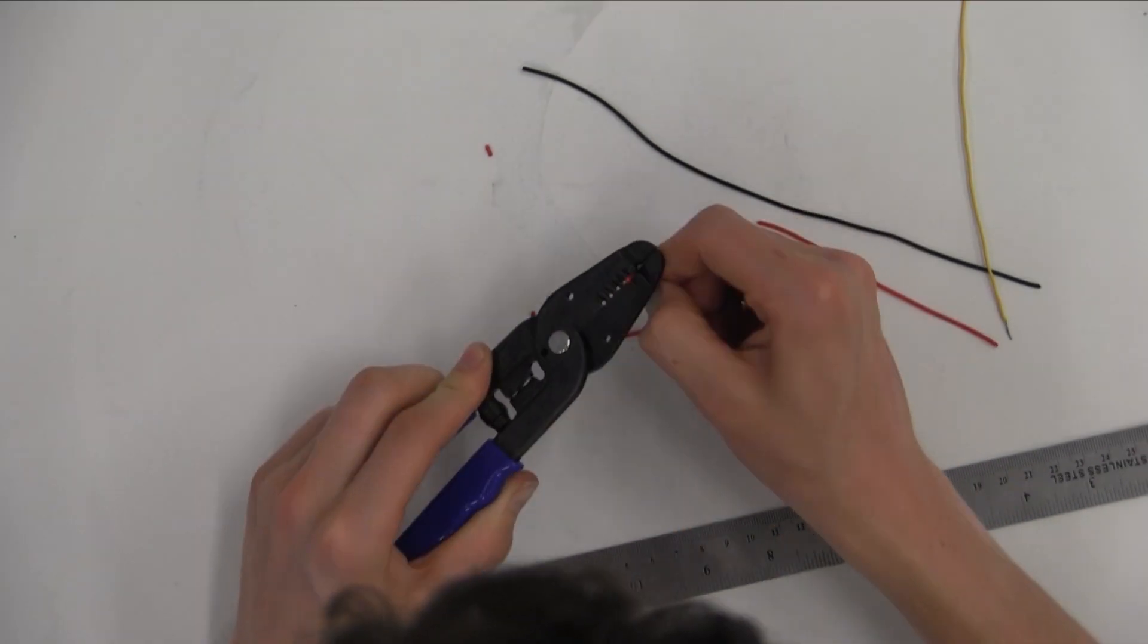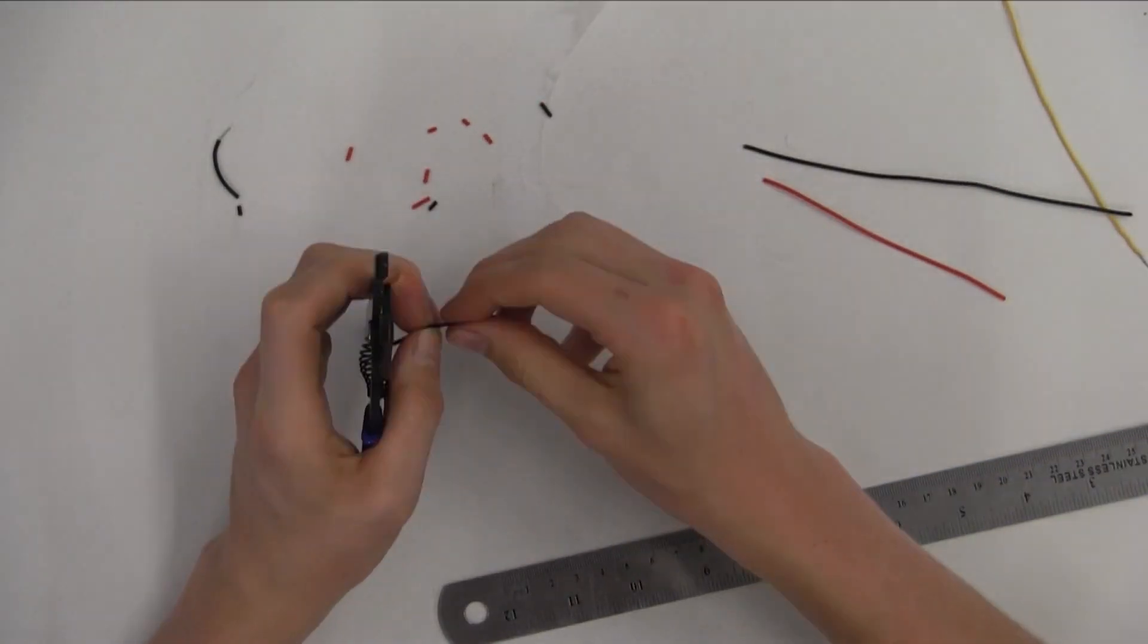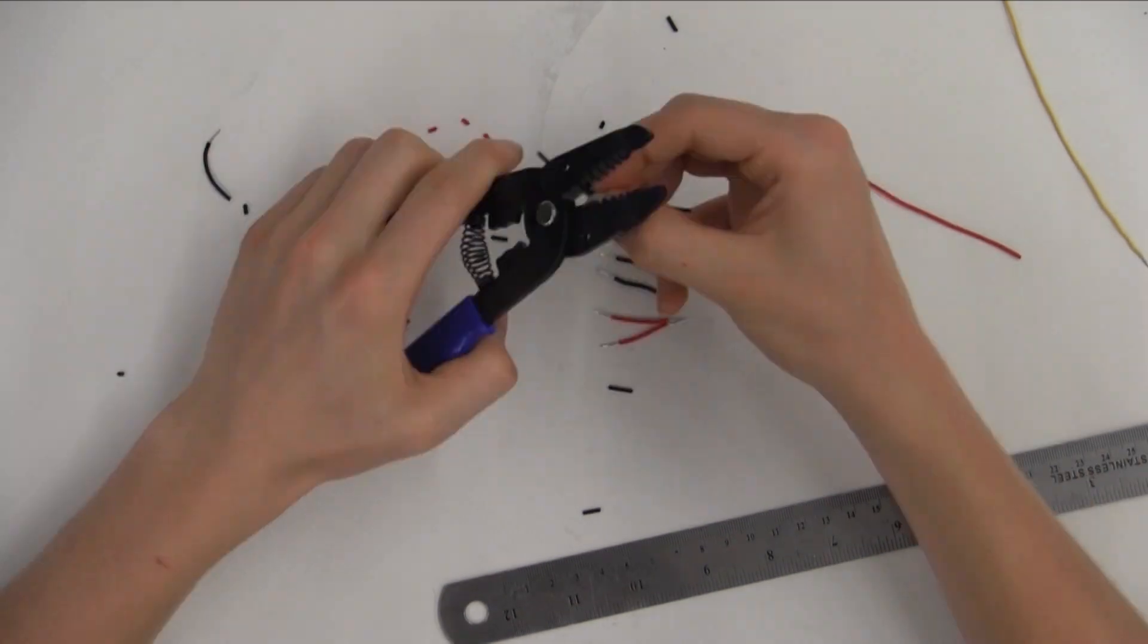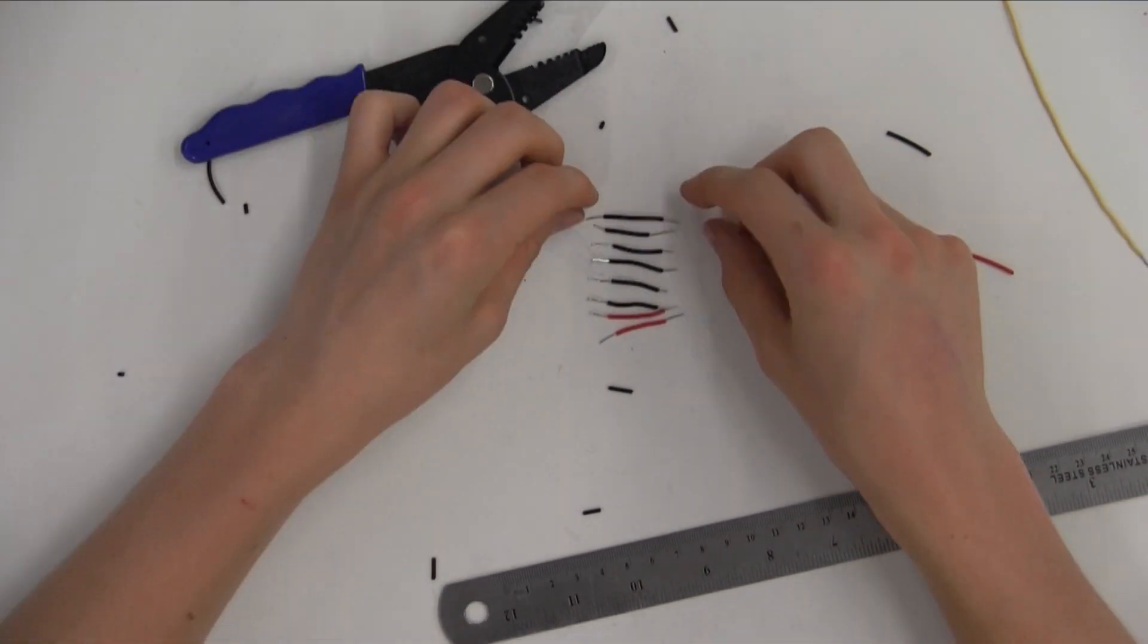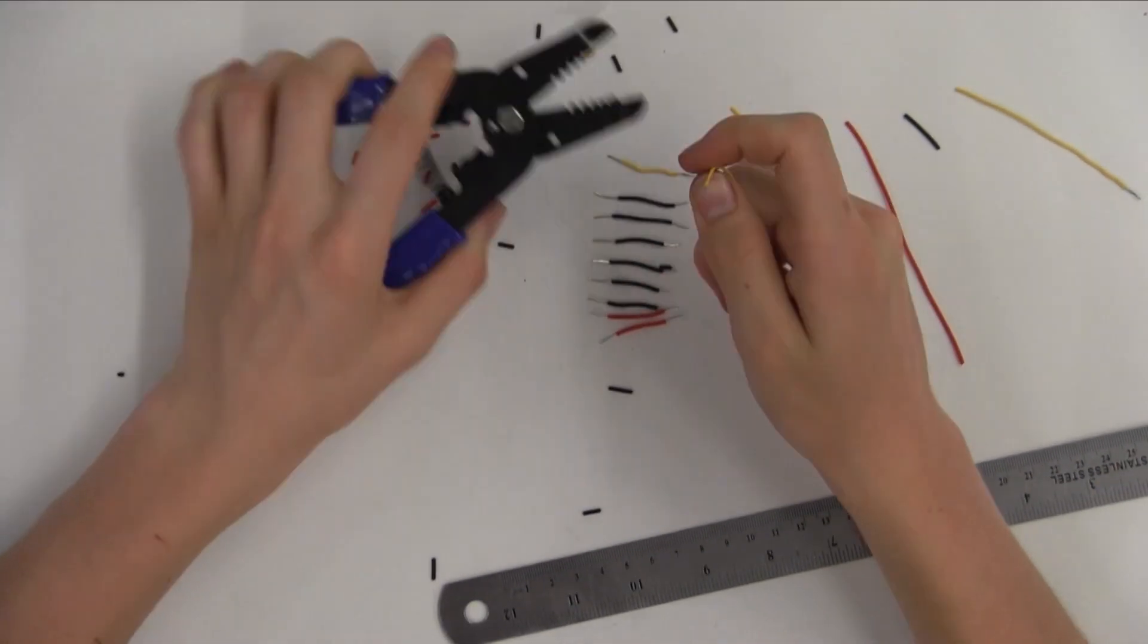Now that you've finished your first wire, cut one more red wire the same way. You'll also need one yellow wire that is six centimeters long.